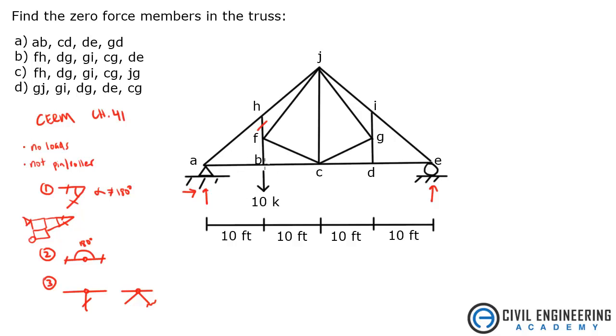So AB and BC, those are collinear, so BF should be a zero force member, but you have this external load of 10 kips acting on that. So that is not a zero force member. And because that is not a zero force member, then FI is not a zero force member, and neither is FC a zero force member.